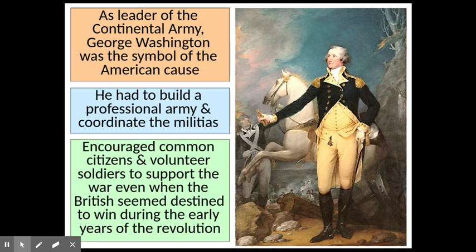George Washington became the symbol of the American cause and the most famous American in the world. He encouraged common citizens and volunteer soldiers to support the war even when the British seemed destined to win. Washington understood that as long as he had an army, the Americans couldn't be defeated — but if his army were ever crushed, the revolution would be over. So while he suffered defeats, he always managed to slip his army away from the British, and that was one of his greatest accomplishments as a general.